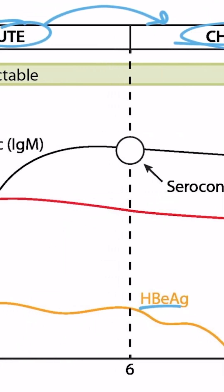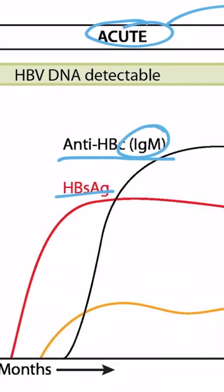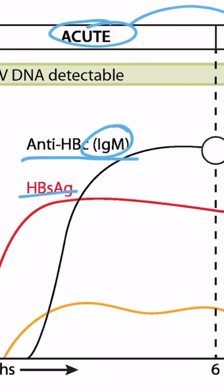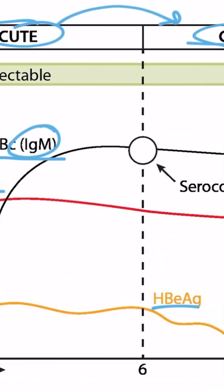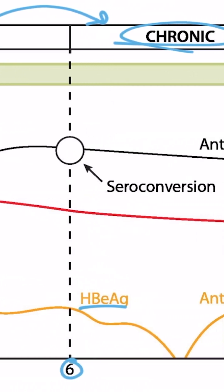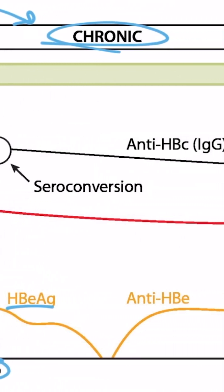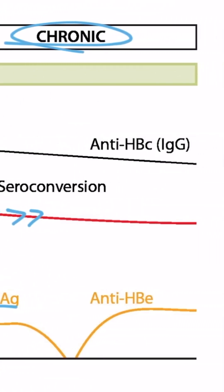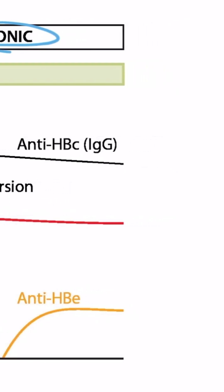Then the E antigen presents next, and then the antibodies against the core, starting with the IgM. Now focusing on the red line, which depicts the surface antigen, you notice at the six-month mark it doesn't go down — it's still present and just continues. This really defines the chronic infection.